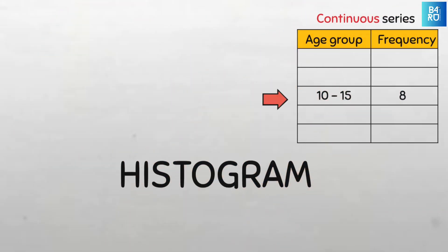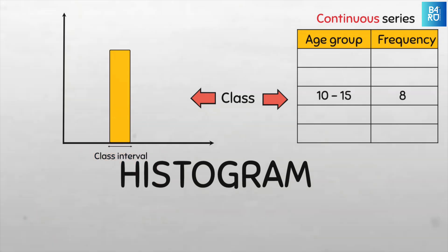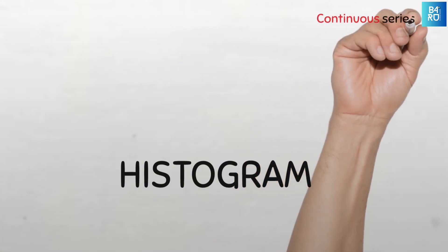In a histogram, each class in the data is represented with a vertical rectangular bar. The width of the bar represents the class interval which is placed on the x-axis, while the height of each bar represents the frequency of the class which is on the y-axis.